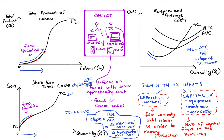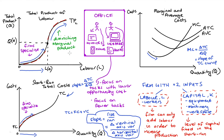Going back to the total product of labor function, after the initial specialization section we reach a point — call the corresponding labor level La and quantity Qa — where the slope goes from increasing at an increasing rate to increasing at a decreasing rate. This is an inflection point, signaling when the TPL function goes from convex to concave. From La onward, each additional unit of labor becomes less effective at producing output, and we have exhausted all possibilities for specialization.